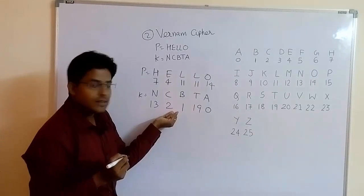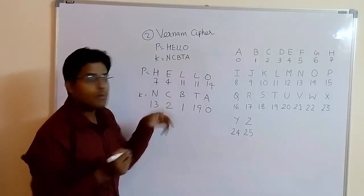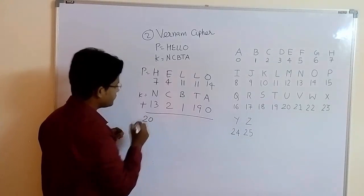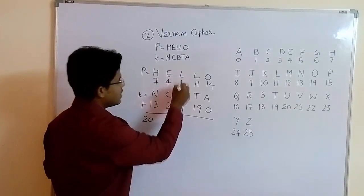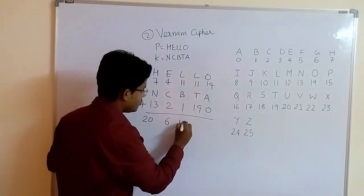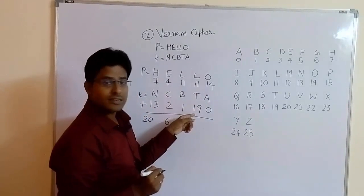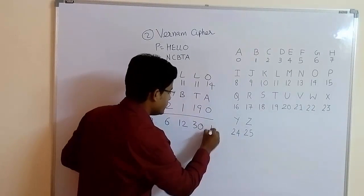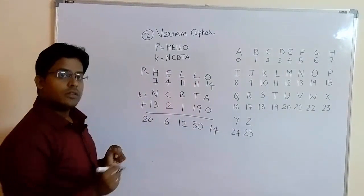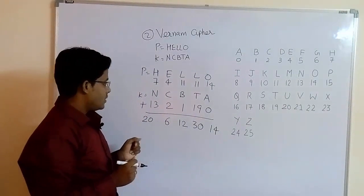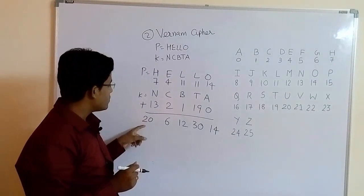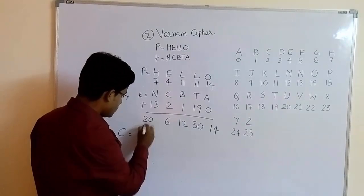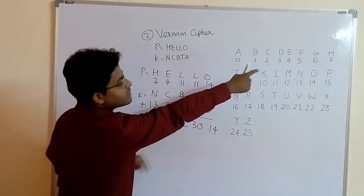Make sure to maintain spacing, otherwise it will be a problem when solving. Now you have to add the numbers: 7 plus 13 is 20, 4 plus 2 is 6, 11 plus 1 is 12, and 11 plus 19 is 30. Then 14 plus 0 is 14. The ciphertext is the alphabet associated with each result. For example, 20 is associated with U, so ciphertext for that position is U. And 6 is G.